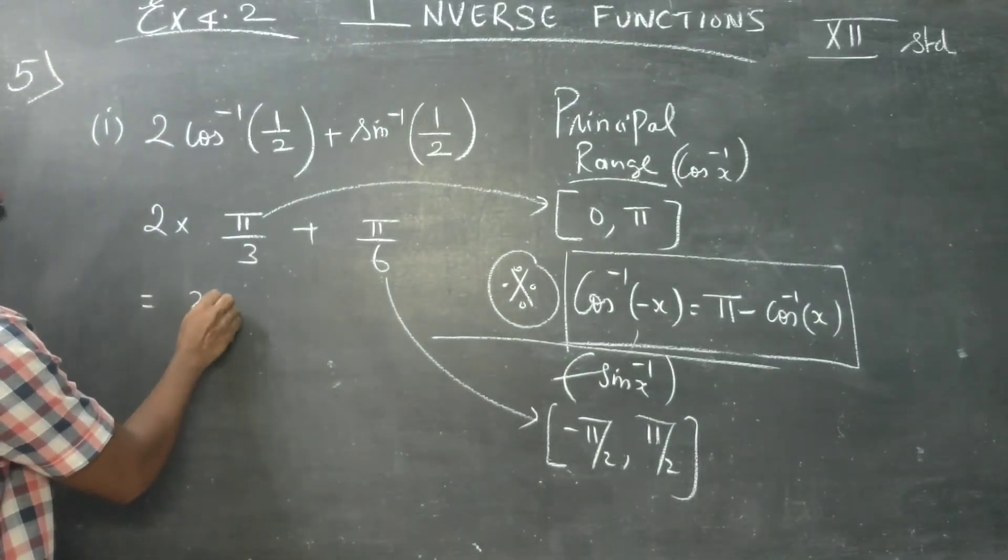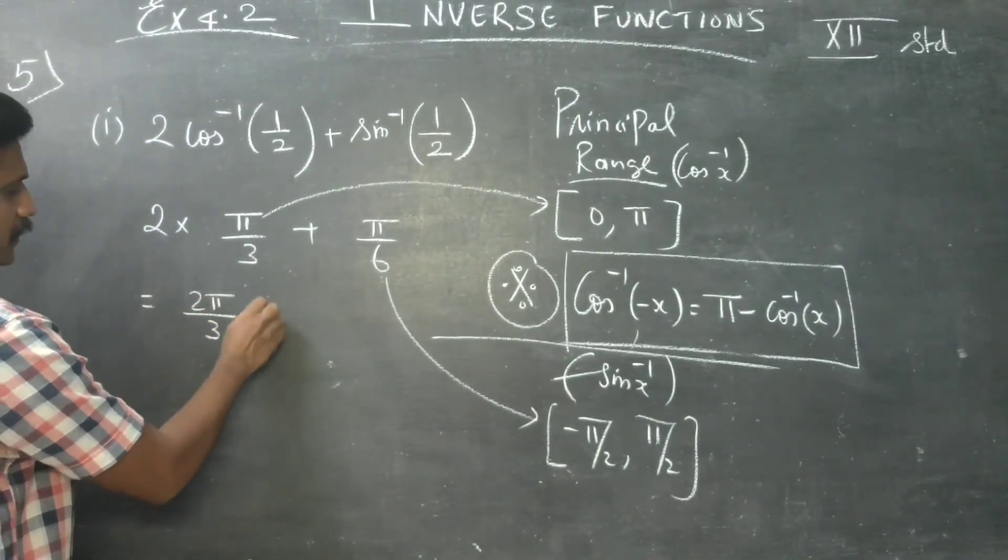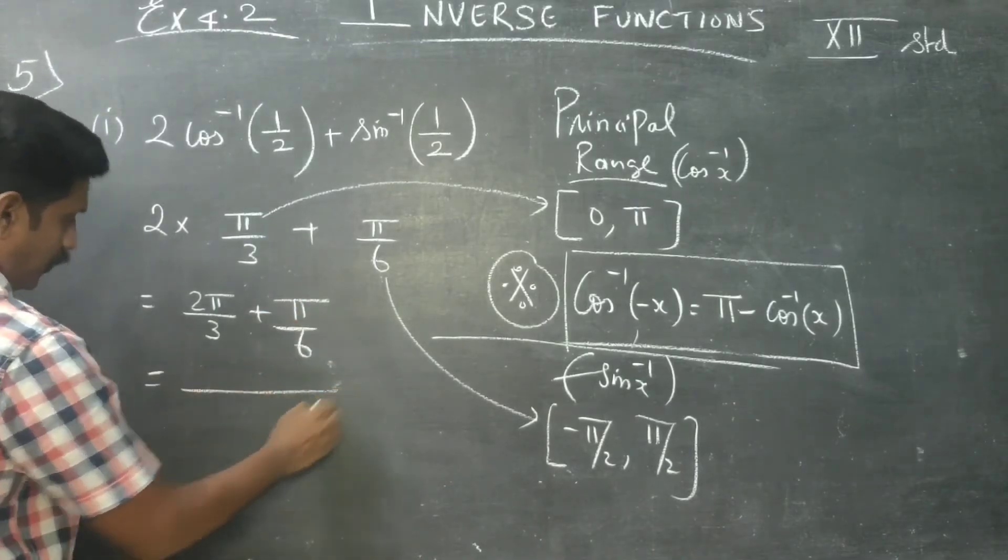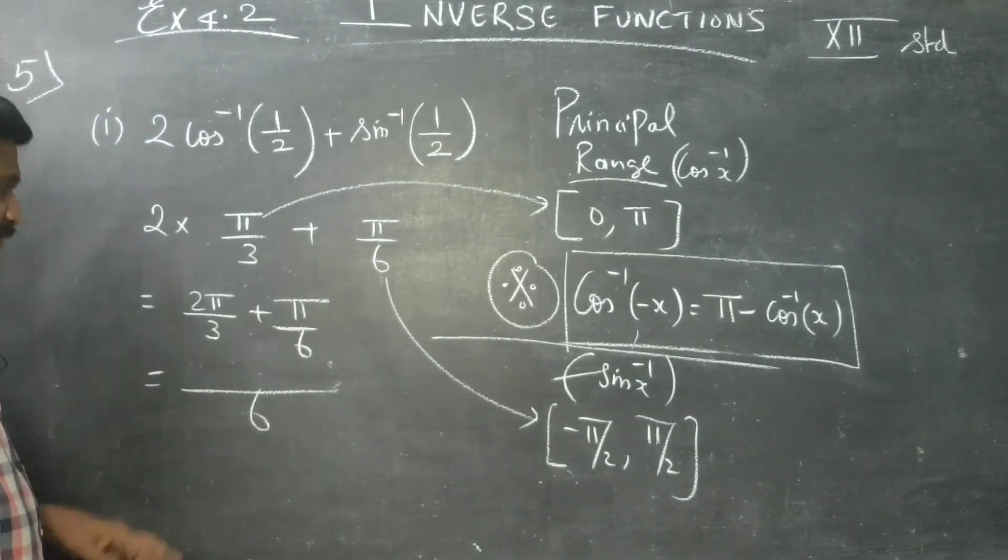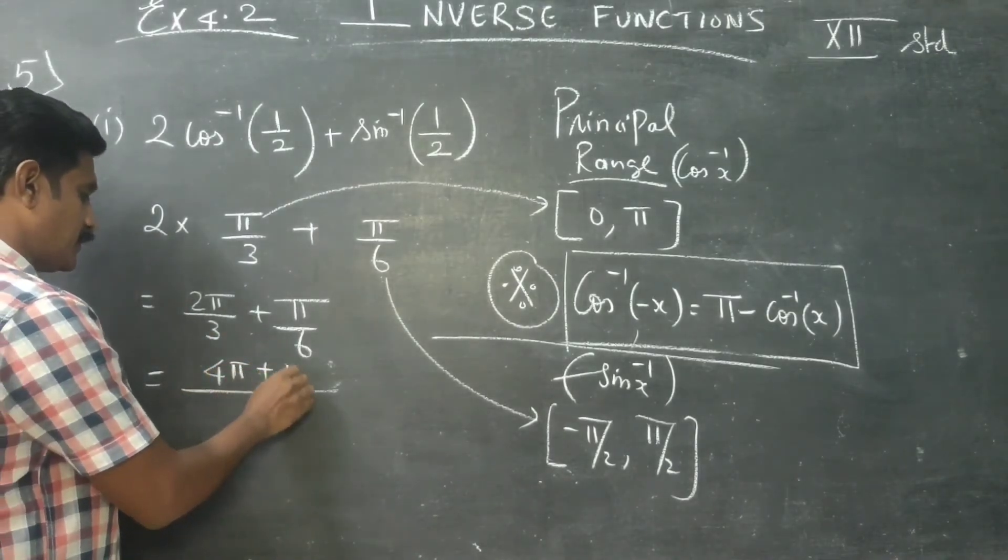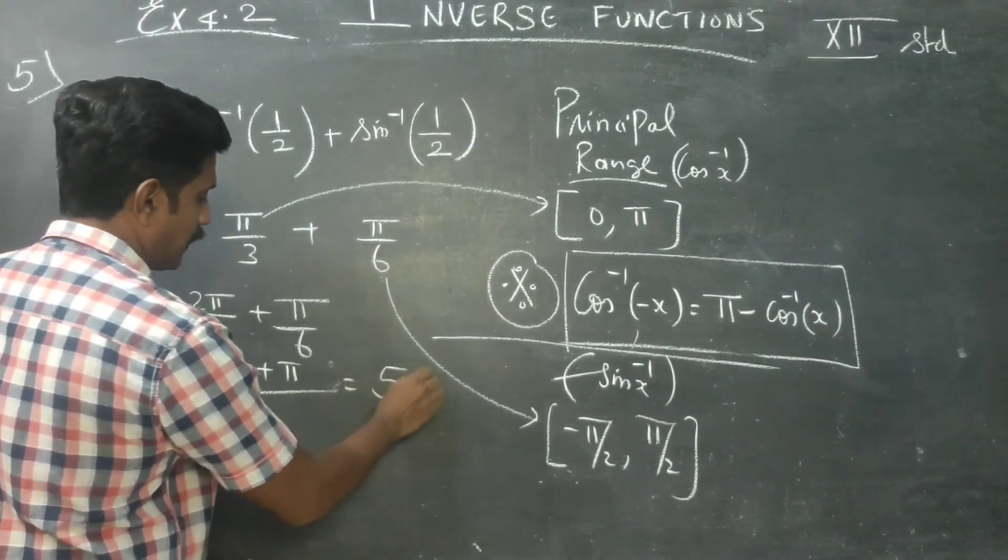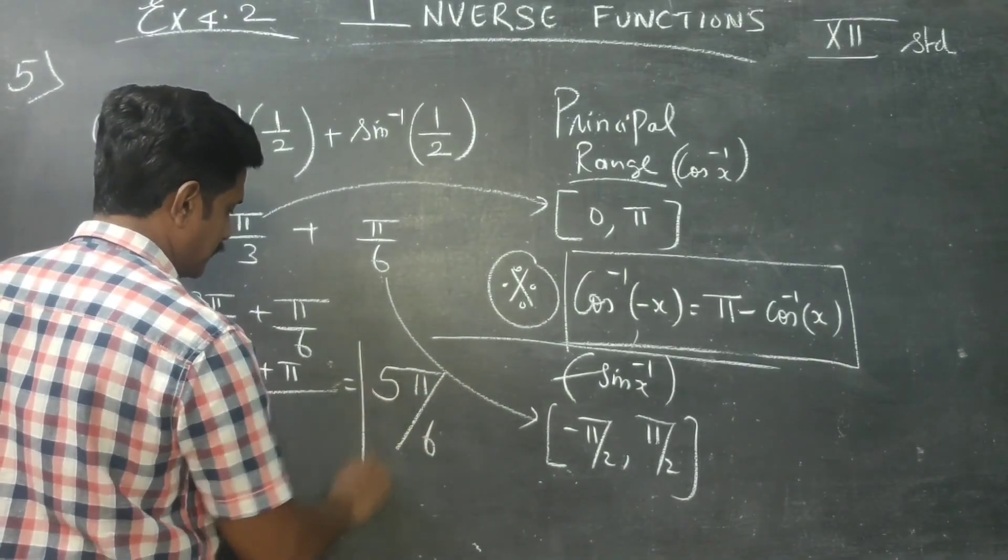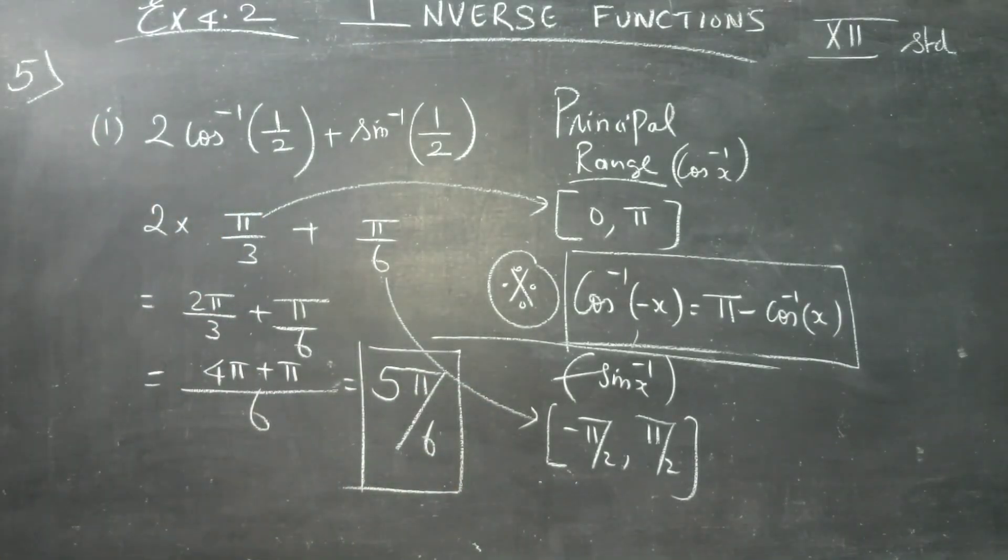You will be getting 2 pi by 3 plus pi by 6. What will be the LCM? 6 will be the LCM, 3 times 2 is 4 pi plus pi. Answer will be 5 pi by 6. This is the simplification for the fifth sum.